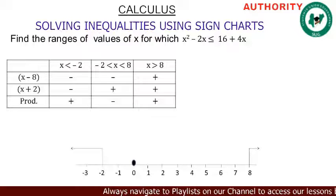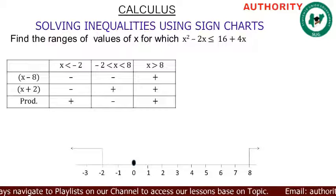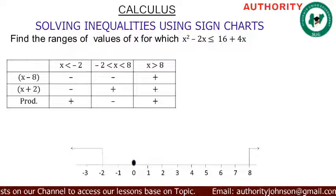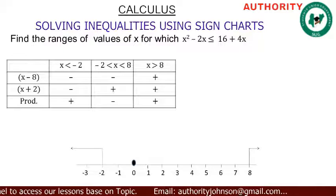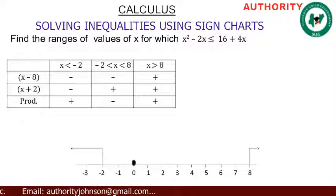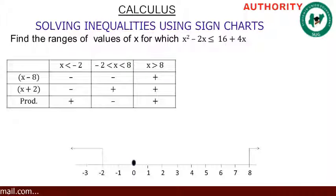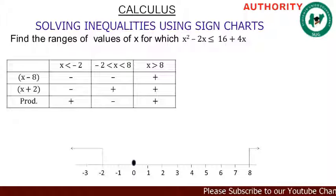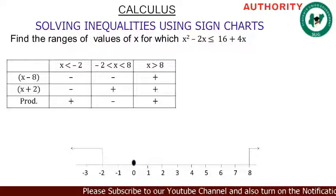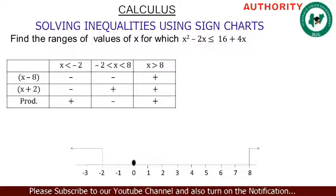How are we going to conclude? Pay attention to what this sign chart is all about. You cannot be solving these without knowing what they mean — don't just solve math for solving's sake. We said the expression x squared minus 2x is less than or equal to 16 plus 4x. From the number line, which range satisfies this expression?